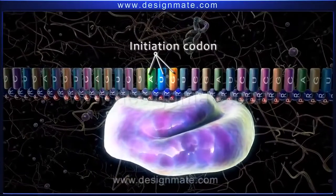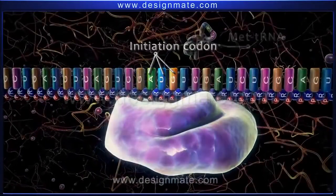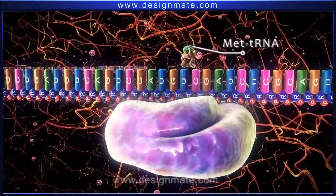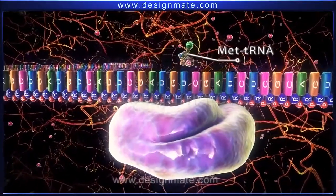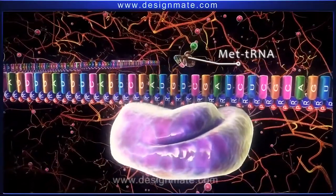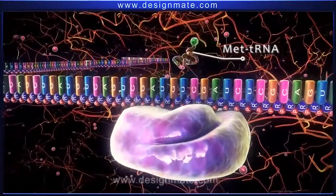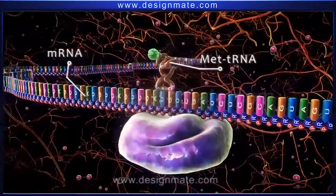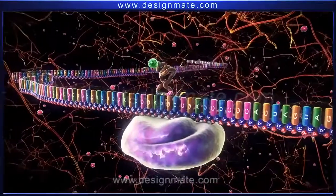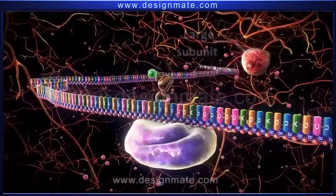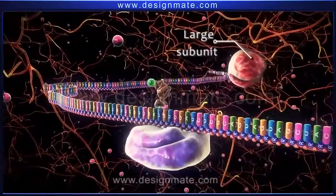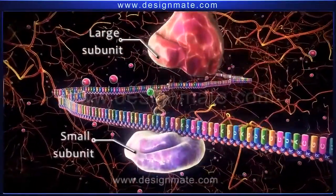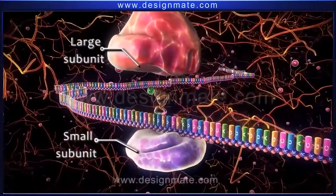At this point, met-tRNA, possessing the anticodon UAC, pairs up with the AUG codon of the mRNA. Then a large subunit of the ribosome combines with the small ribosomal subunit.